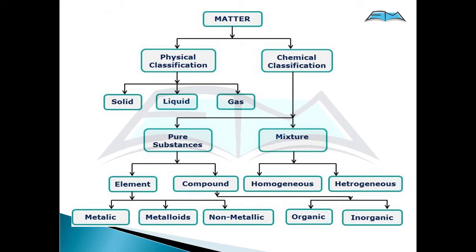Physical classification is divided into three categories: solid, liquid, and gas. Whereas chemical classification is divided into two categories: pure substance or mixture. Pure substance may be an element or a compound. Mixture may be homogeneous or heterogeneous. Elements may be metallic, metalloids, or non-metallic. And compounds may be organic or inorganic.